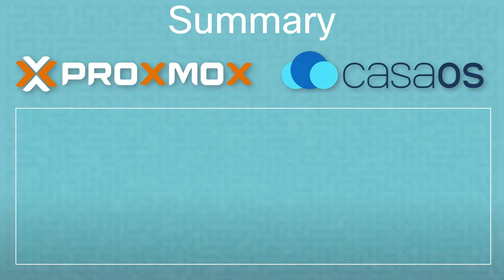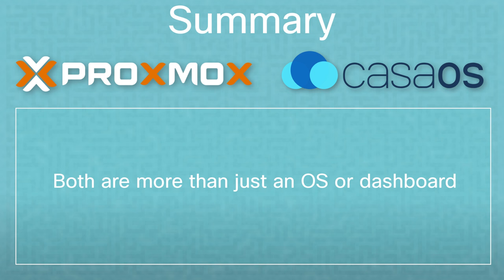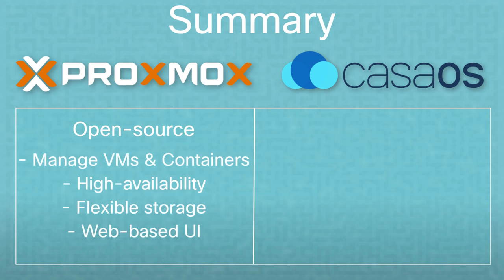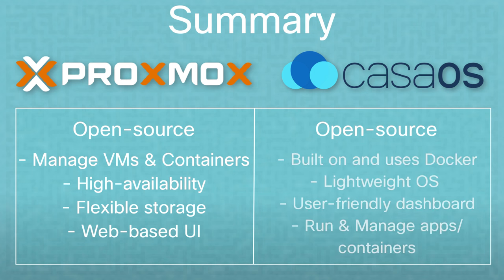Both Proxmox and CasaOS are more than just an operating system or a dashboard. Proxmox is an open-source server virtualization management platform. While it does have its own operating system based on Debian Linux, it's a comprehensive solution for managing virtual machines and containers, offering features like high availability, flexible storage options, and a web-based management interface. On the other hand, CasaOS, also based on an operating system and built on top of Docker, is not merely a dashboard. It's an open-source project designed to be a simple and lightweight operating system for running and managing various applications. It provides users a user-friendly dashboard for managing these applications, but it also provides the underlying system to run them. So while Proxmox and CasaOS both involve operating system components and provide user interfaces or dashboards for managing resources, they offer much more than just those elements.